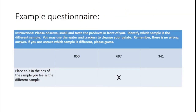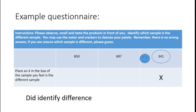Here's an example questionnaire, and someone's filled it out — they've decided that was the odd sample. Based on the set list, we check whether they got it right. In this case they did not identify the difference correctly, while in another case the imaginary panelist did identify the difference. The set list we created based on our difference testing discussion will help us identify where the samples are scoring.